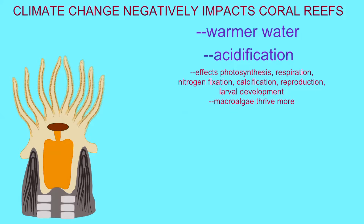As more carbon dioxide is produced by human activity, more carbonic acid dissolves in the ocean, and the ocean acidifies. This acidification decreases the levels of photosynthesis in corals, decreases their respiration, decreases their nitrogen fixation and their calcification, has detrimental effects on their reproduction and larval development, and can encourage the growth of some macroalgae which can grow over the corals and decrease their growth.